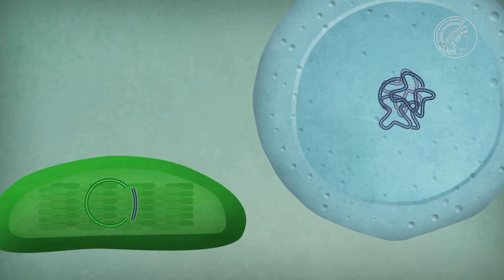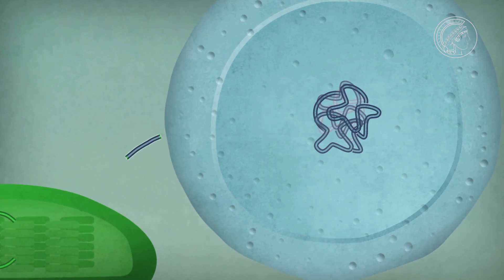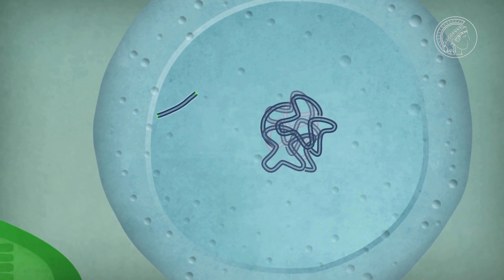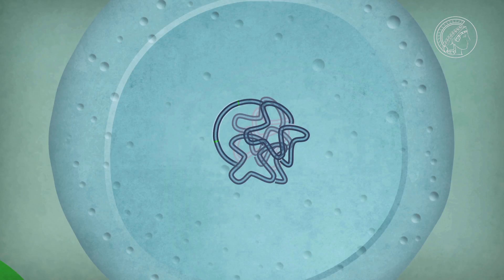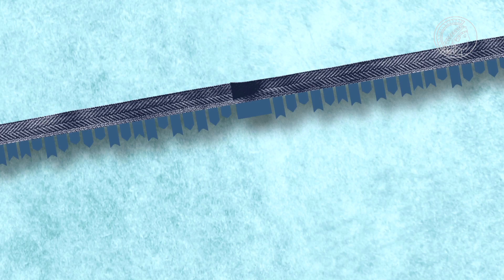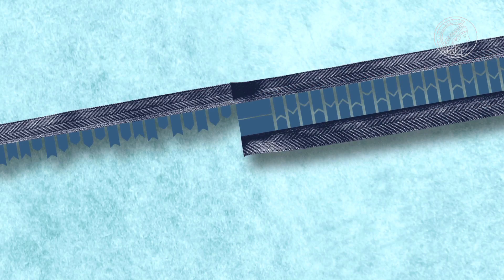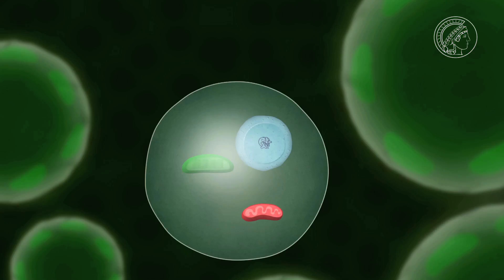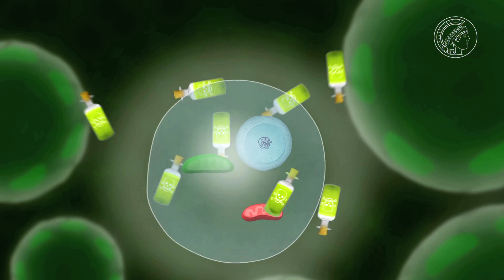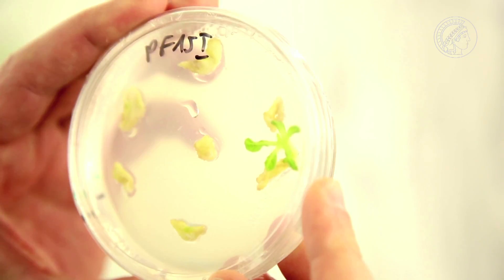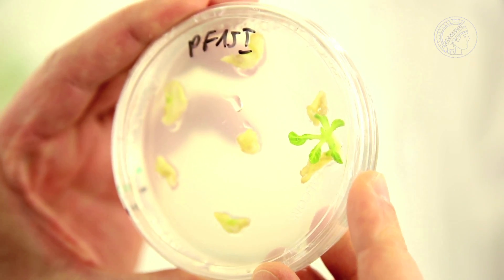The gene must have migrated from the chloroplast into the cell nucleus. Since it is a nuclear gene, it can only become active there. The nuclear enzyme — RNA polymerase, the blue slider — recognizes its starting point, and the gene can be translated into the correct protein. The cell now has a new property: it is immune to the toxin, which is why a new shoot can grow.